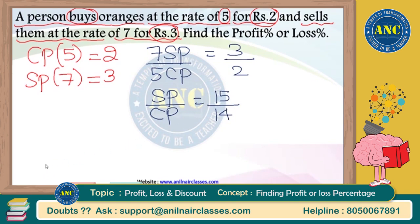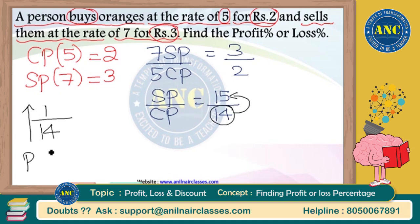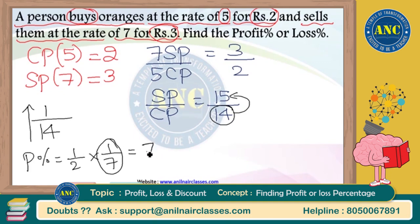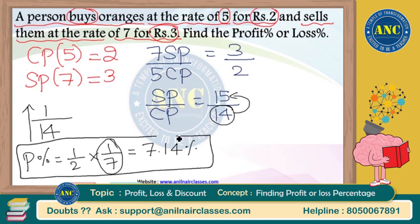SP/CP is 15 by 14. Denominator is initial value 14 — write the same 14 in denominator. 14 is becoming 15, increase of 1. Increase represents profit percentage. 1 by 14 = 1/2 into 1/7. 1/7 is 14.28, and half of 14.28 is 7.14 percent. The answer for this question is 7.14 percent profit.